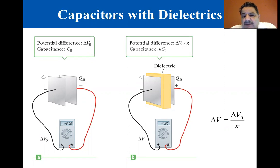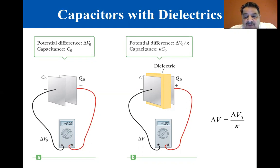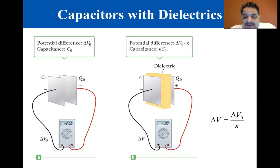Let's imagine a parallel plate capacitor of charge Q sub-zero and capacitance C sub-zero. With no dielectric, the potential difference across the capacitor plates can be measured, as with the figure on the left. Because the capacitor is not connected to an external circuit, there is no pathway for charge to leave or be added to the plates.